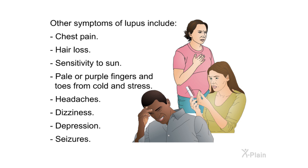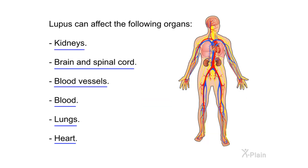Other symptoms of lupus include chest pain, hair loss, sensitivity to sun, pale or purple fingers and toes from cold and stress, headaches, dizziness, depression, and seizures. Lupus can affect the following organs: kidneys, brain and spinal cord, blood vessels, blood, lungs, and heart.